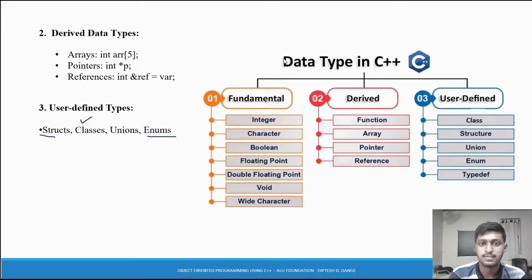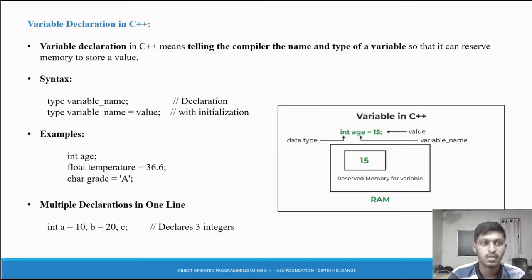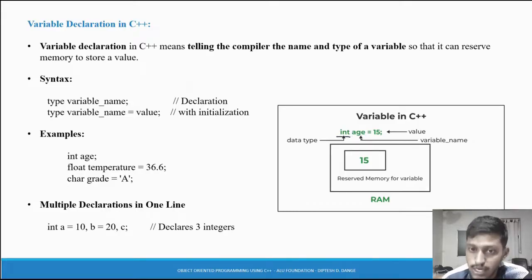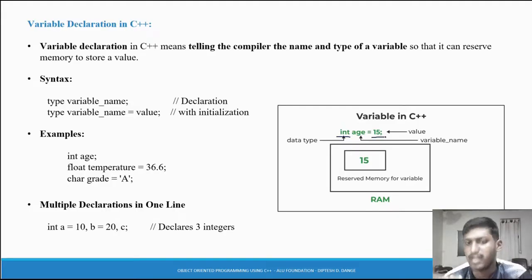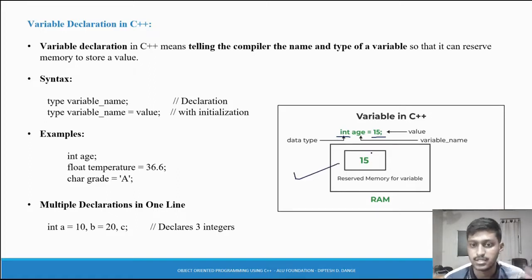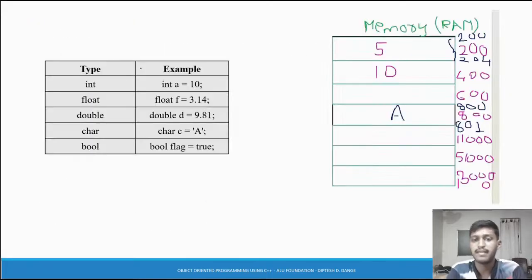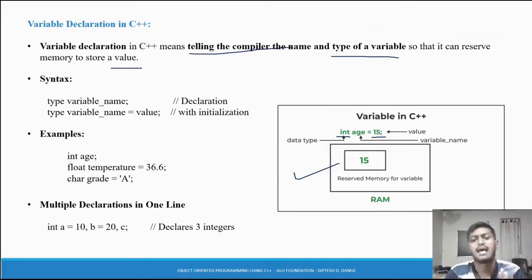Next concept is variable declaration in C++. You have to specify the data type, then the variable name and value - same as in C. Variable declaration means telling the compiler the name and type of variable so that it can reserve memory to store a value. The syntax involves declaration and initialization, which are slightly different.